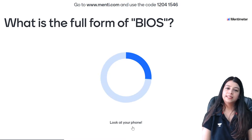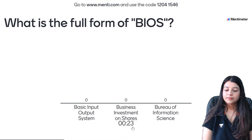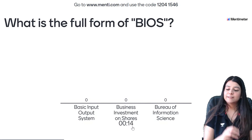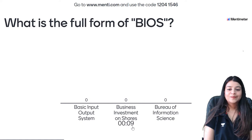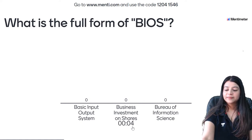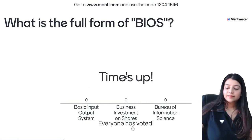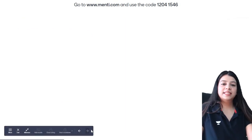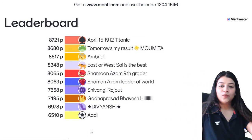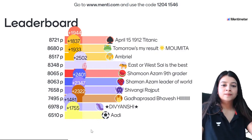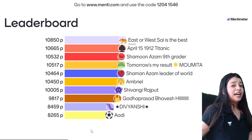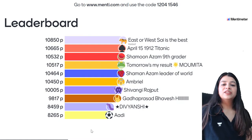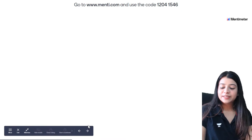Question 13 of 50 — what is the full form of BIOS? Is it Basic Input-Output System, Business Investment on Shares, or Bureau of Information Sciences? Basic Input-Output System is the correct answer. Good job. Leaderboard: Sai on first position, then April 15th Titanic, Shamoon Azam, Momata, Shaman Azam, Emreel, Shivangi Rajput, Bhavesh, Divyanshi, and Adi on 10th position.